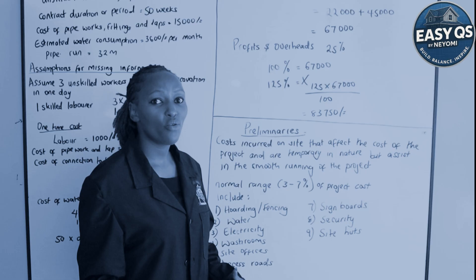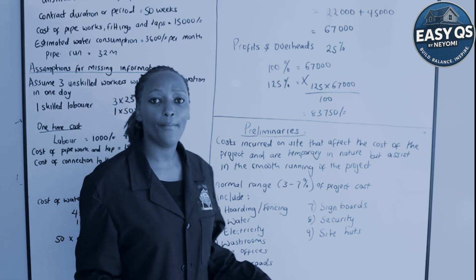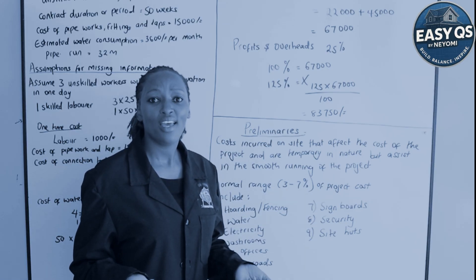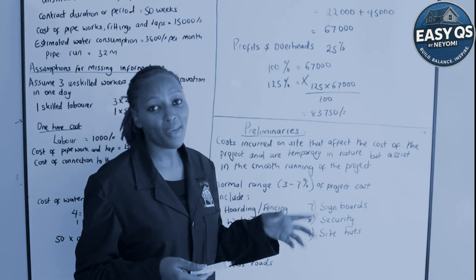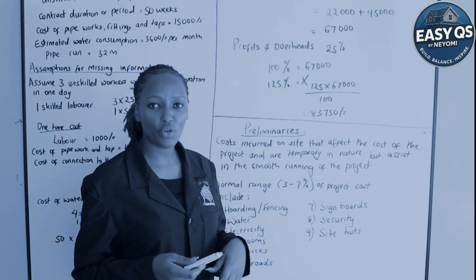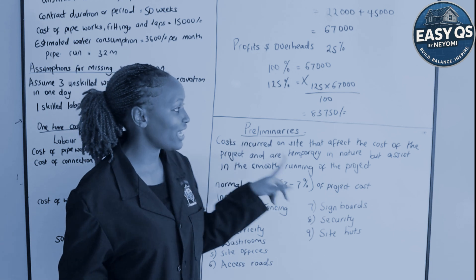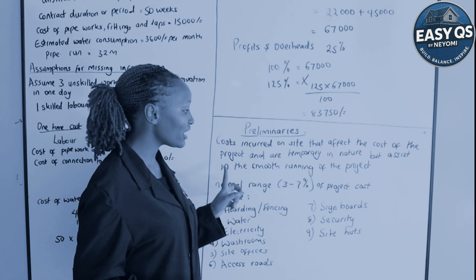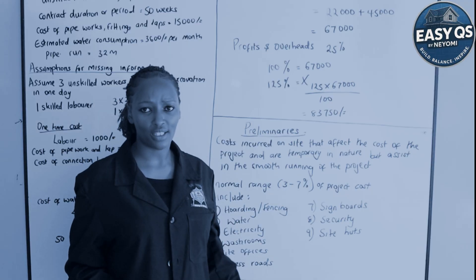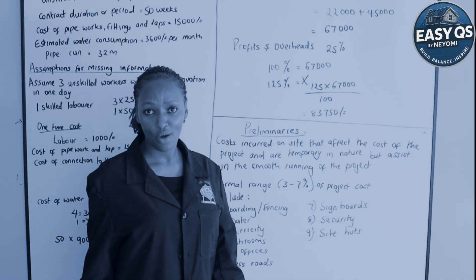Preliminaries are costs incurred on site that affect the cost of the project and are temporary in nature. They affect the project cost but are temporary — we connect or construct them for the convenience of the construction process, and after construction we may do away with them or change them. For example, a mabati fence — a fence made of iron sheets — around the site may be temporary if the client plans to build a perimeter wall later.